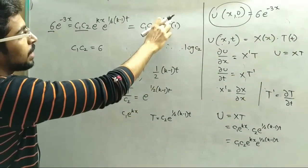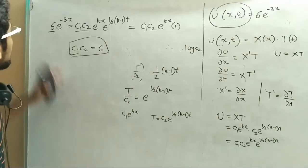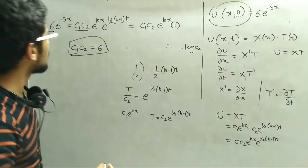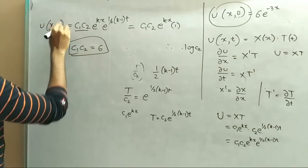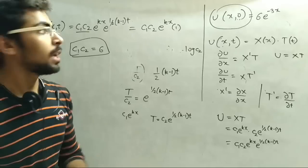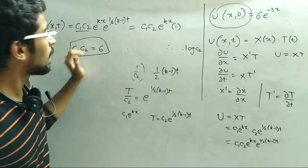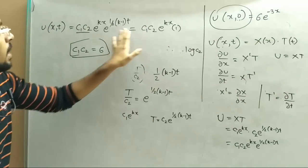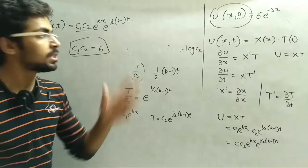Since t equals to zero, the e raised to one half (k minus 1) times zero part becomes one. So c1 into c2 times e raised to kx, and comparing with 6 e raised to minus 3x, we get c1 into c2 equals to 6 and k equals to minus 3. Agar yeh question mein nahi puchha hoa hai toh your general answer is u of x and t. Agar u of x zero equals to 6 e raised to minus 3x diya hai toh aapko compare karna hai. This is the required general solution of this example.